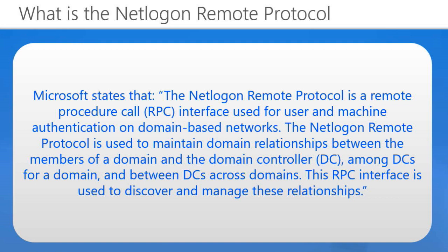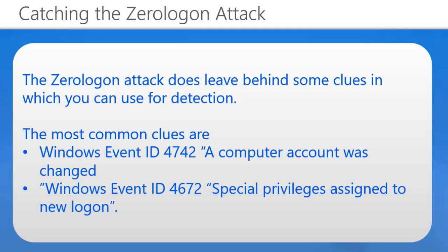Catching the Zero Logon attack can be done by using Event Viewer, because the Zero Logon attack normally leaves a couple of clues behind. Those clues are Windows Event ID 4742 — a computer account was changed — along with Event ID 4672 — special privileges were assigned to a new logon.